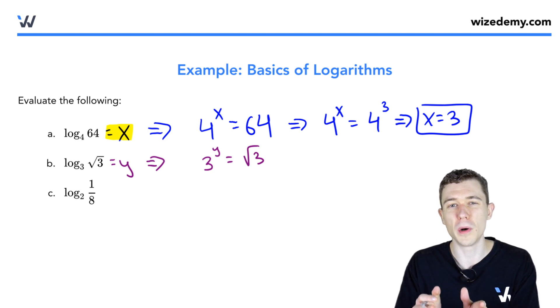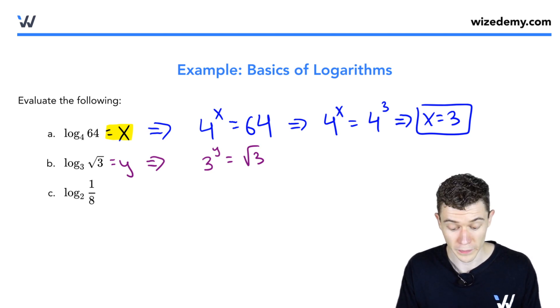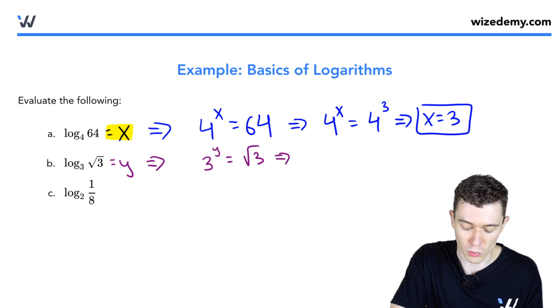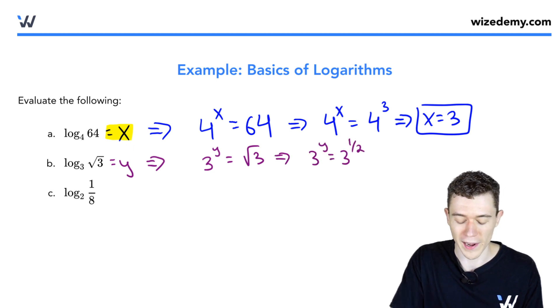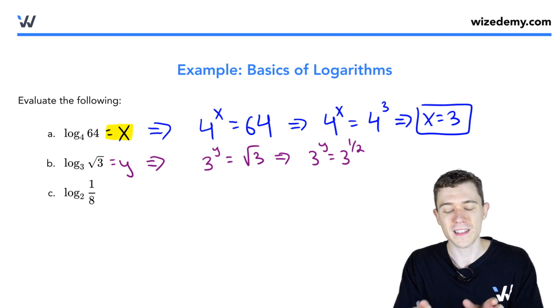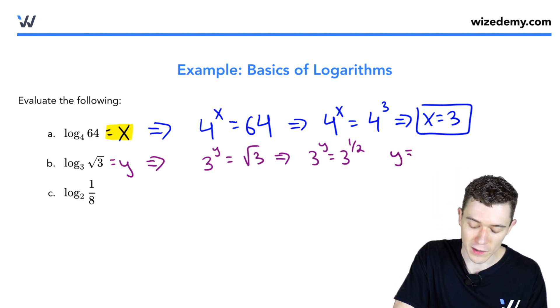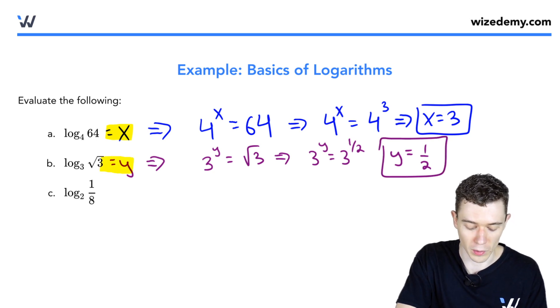How can we rewrite both sides as base 3? Square root means 1 half power. So we could just rewrite this as 3 to the y equals 3 to the 1 half. Both sides are base 3. We set the exponents equal to each other. Y must be a half. That's what we were looking for.